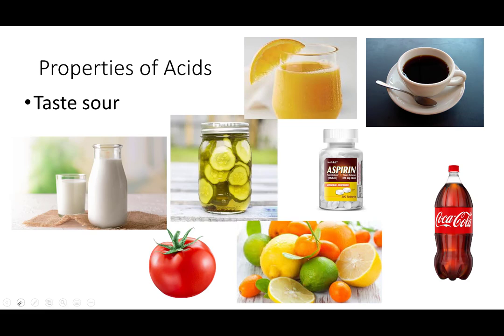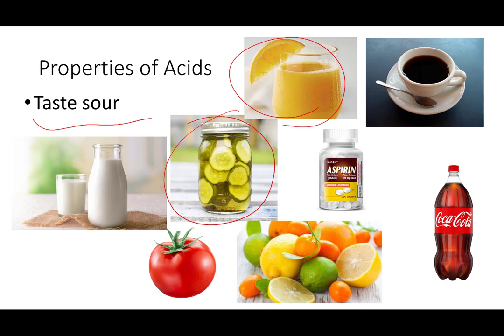Properties of acids: a lot of the things that you and I taste that tend to have a little bit of that sour tang are acidic — vinegary sorts of things, pickles, pickled onions, olives, and anything that's pickled that has that sour tang to it is an acidic solution. Citrus fruits — oranges, lemons, limes, grapefruits — all acidic.